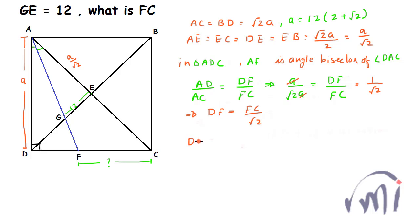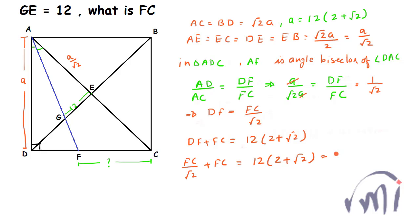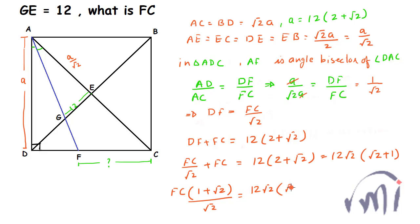We also know DF plus FC equals 12 multiplied by (2 plus root 2). So FC divided by root 2 plus FC equals 12 multiplied by (2 plus root 2), which can be written as 12 root 2 multiplied by (root 2 plus 1). Taking FC common, we get FC multiplied by (1 plus root 2) divided by root 2 equals 12 root 2 multiplied by (root 2 plus 1). From here FC is equal to 12 root 2 multiplied by root 2, which equals 24.